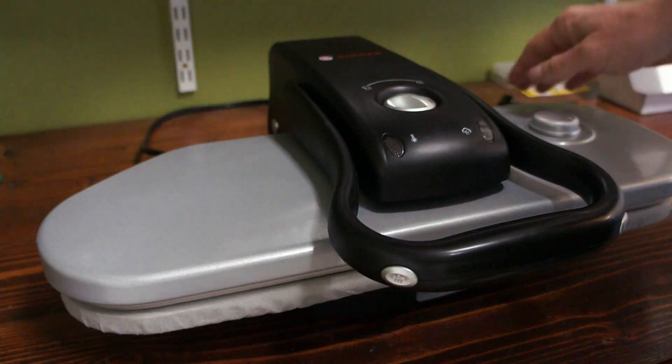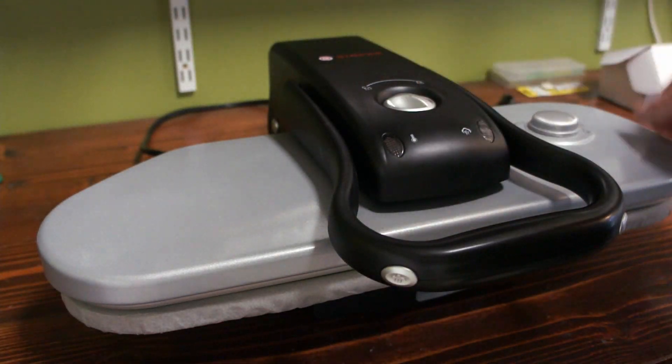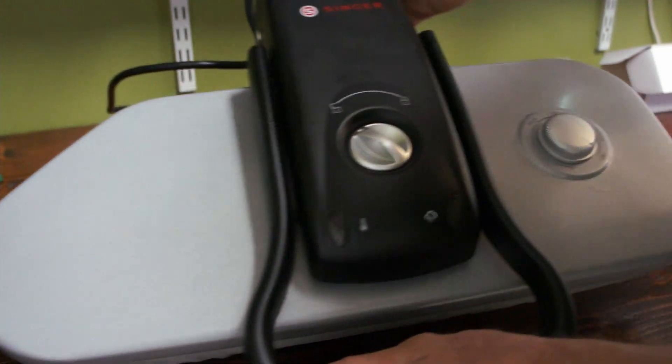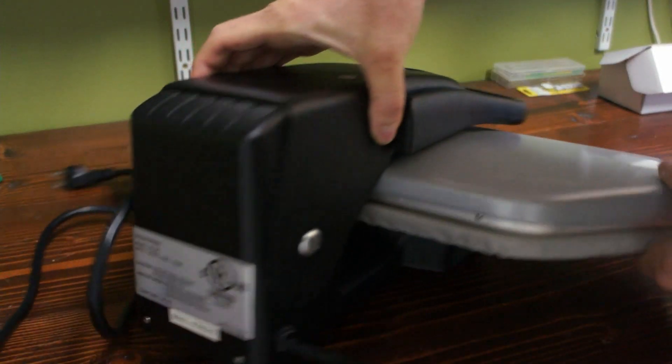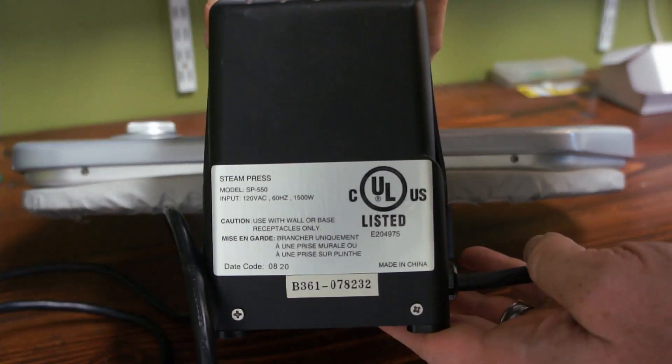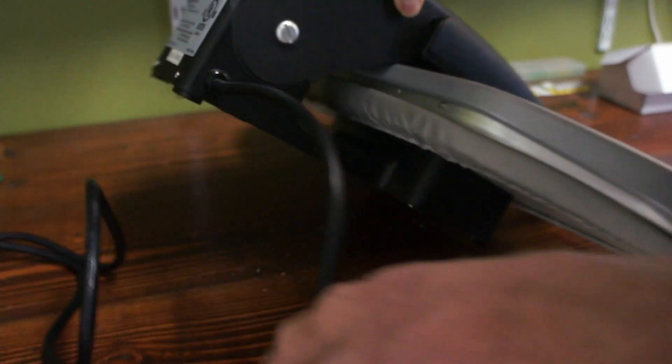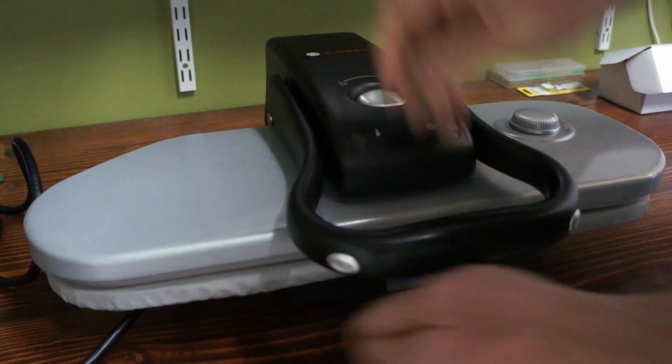My wife has this Singer steam press that doesn't turn on anymore. I figured I'd make a video on how I go about repairing this. I haven't been able to find any details online about how to take these apart.